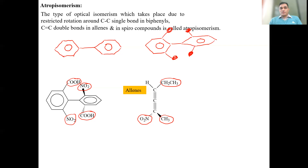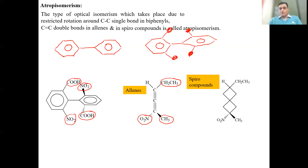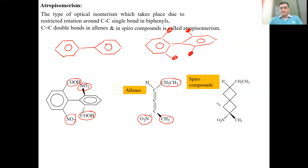This property of atropisomerism also takes place in spiro compounds, which are bicyclic compounds having only one common carbon atom. Between the two rings there is one common carbon atom. We have shown two square rings — like two cyclobutane rings — with only one carbon common between them. In these bicyclic compounds, rotation also gets restricted and the two rings become perpendicular to each other.